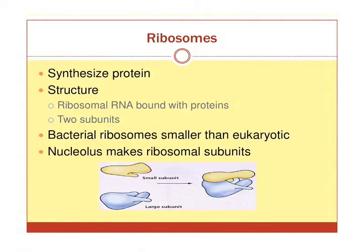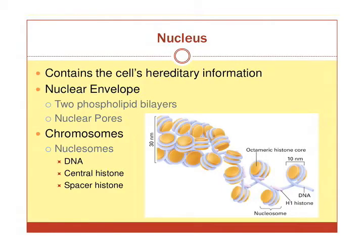Ribosomes synthesize proteins and have two subunits — one larger, one smaller. To make proteins, ribosomes attach to an mRNA, which is a transcribed copy of DNA, and use those directions to synthesize specific proteins. They are assembled in the nucleolus.